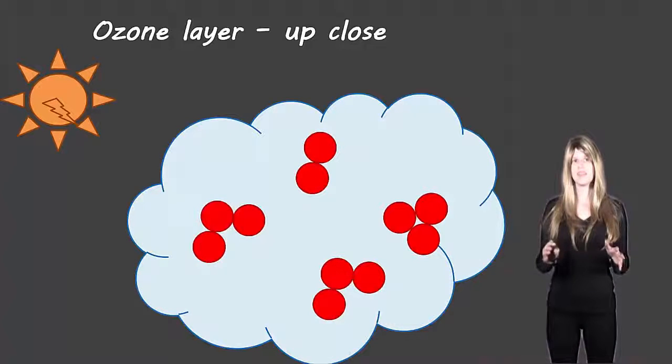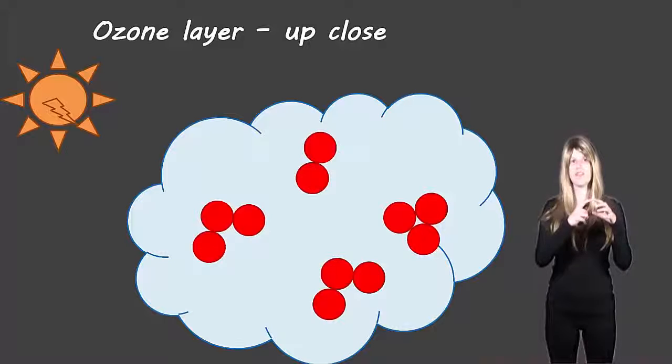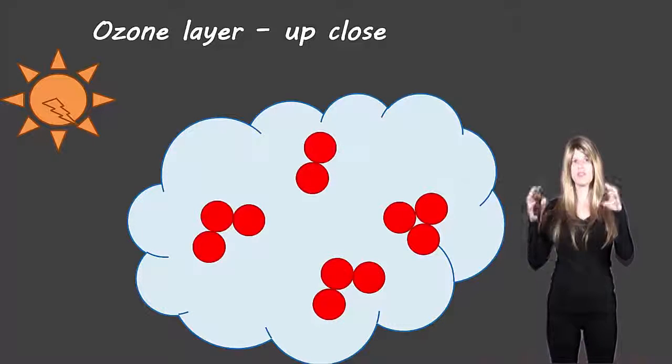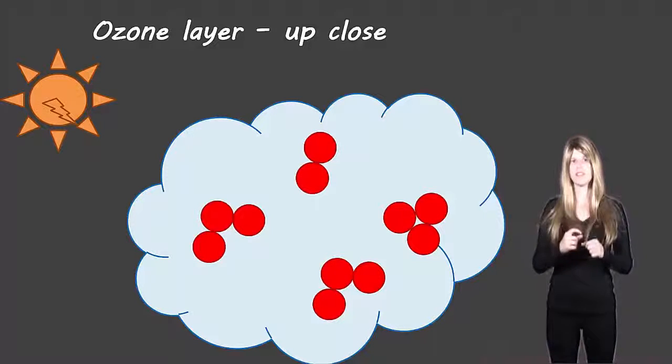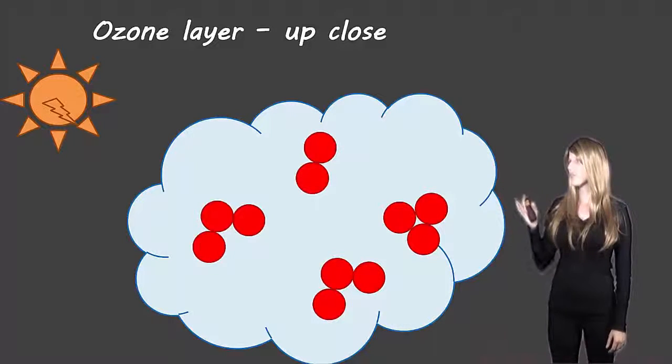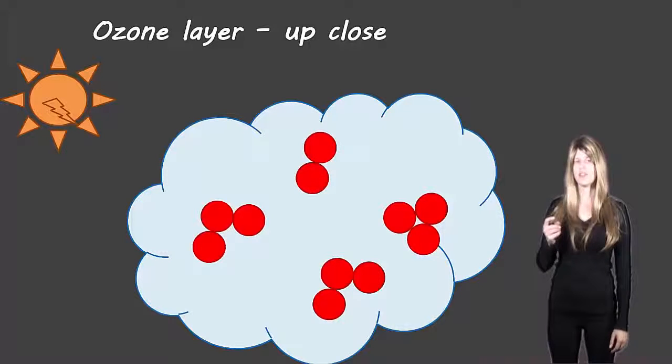Now before we start we just need a little bit of terminology. Oxygen atoms are just a single oxygen by itself. Oxygen molecules are when there are two oxygens attached together and ozone is when there are three oxygens attached together. So in this picture we have three ozone molecules and we have one oxygen molecule.